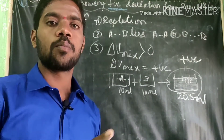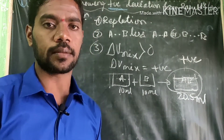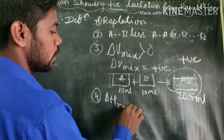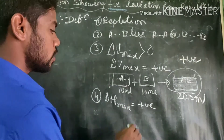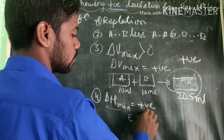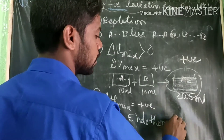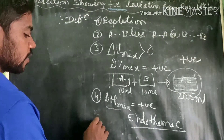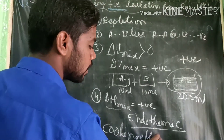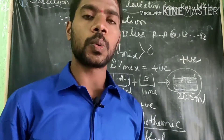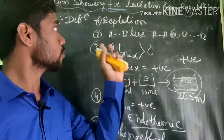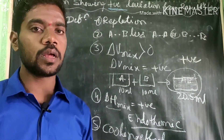The fourth characteristic: ΔH_mix is positive. From thermodynamics, if ΔH is positive it is called endothermic — some heat will be absorbed from the system. Therefore, the fifth characteristic: it gives a cooling effect, because it is an endothermic reaction. These are the characteristics observed in solutions showing positive deviation from Raoult's law.